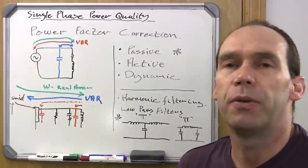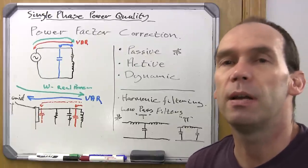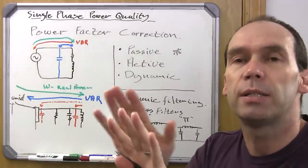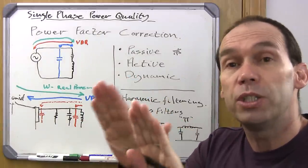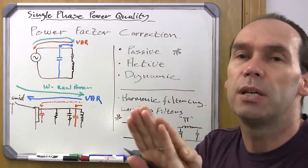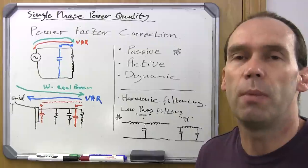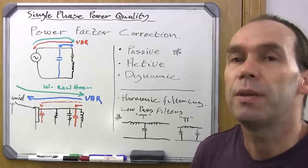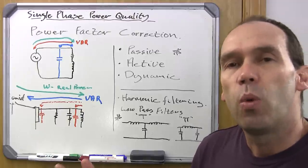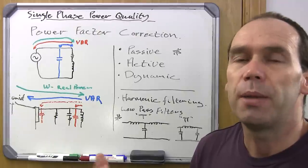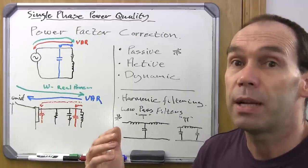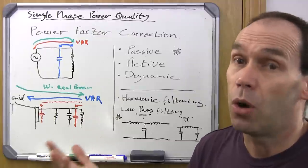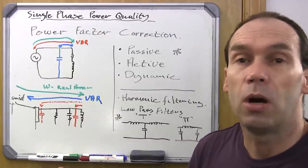Now let's look at power factor correction. By now you've realized there are good reasons to have your power at unity, or to try and get your voltage and your current as close to unity as possible, and also to remove harmonics. Let's go into some of the forms of power correction and show you how and where power factor correction can be implemented, because that has a potential effect on equipment and wiring in your home or in a large industry.